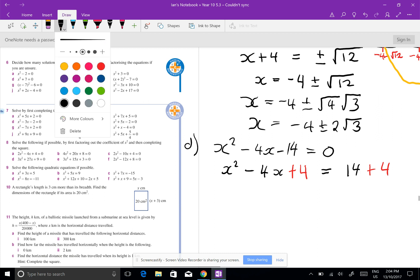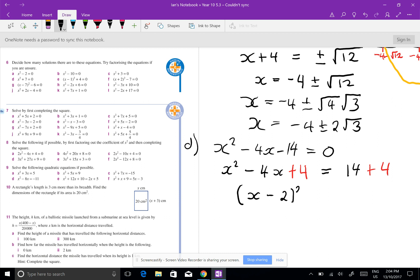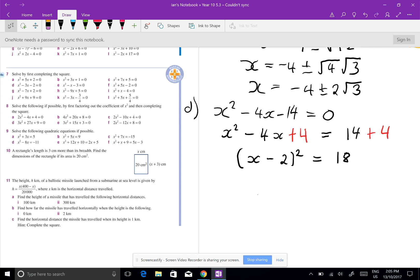Now that gives you on the left-hand side x minus 2 all squared. 14 plus 4 is 18. You then square root both sides, so x minus 2 equals plus or minus root 18. You can simplify that but I'm going to take the 2 over, I'm going to add 2, 2 plus or minus root 18.